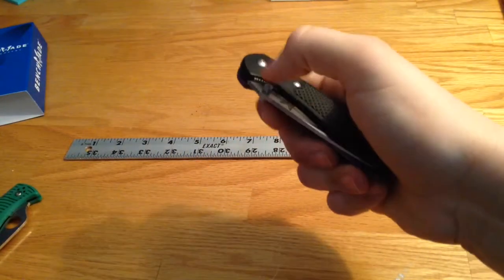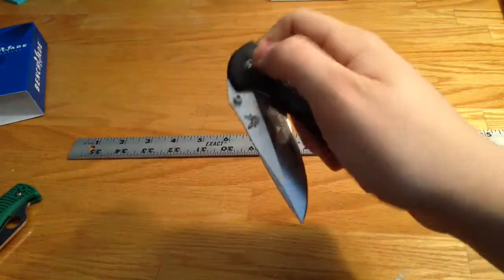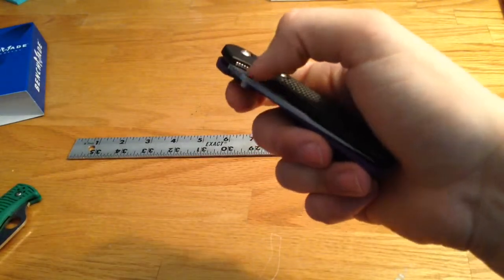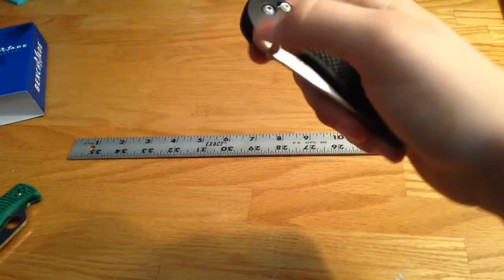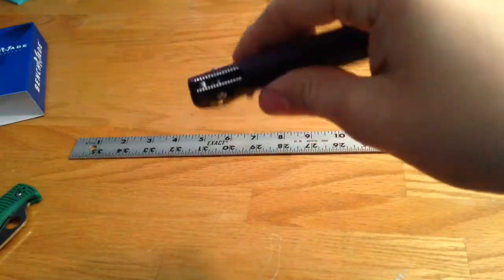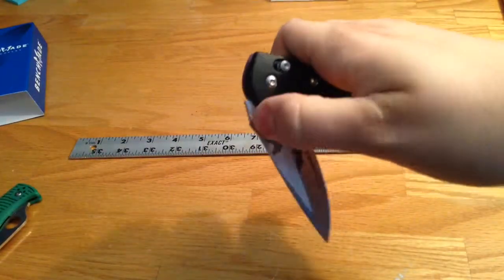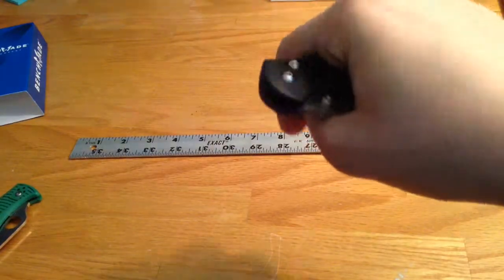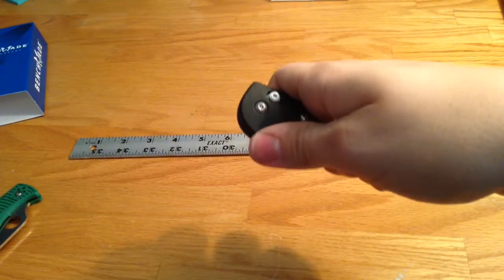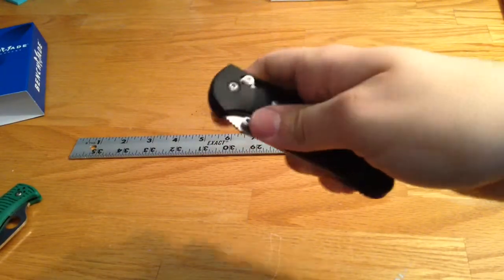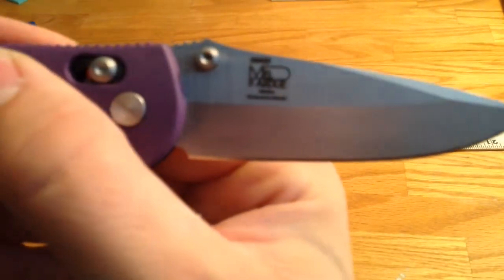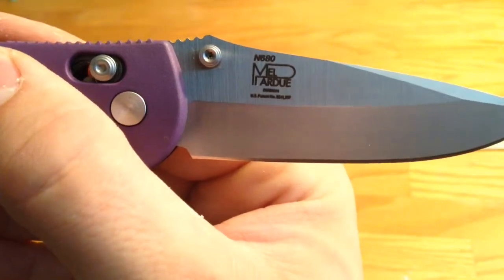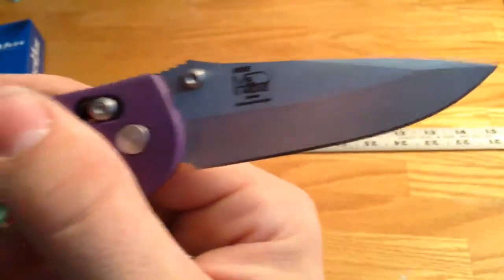Now the normal Griptilian has a 154cm blade, which is nice, but I wanted to go the extra mile. You could also get D2 tool steel, which is a little bit more corrosive, but it's a lot harder. S30V is as high as you could go, great steel, but S30V, I see it all the time. So I opted for, don't know if you can see it right there on the blade, N680, high corrosive resistance.